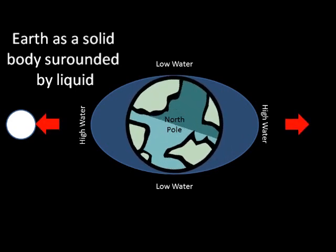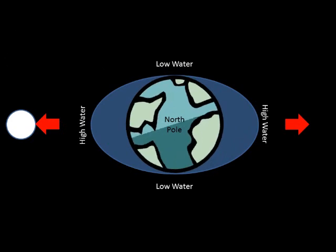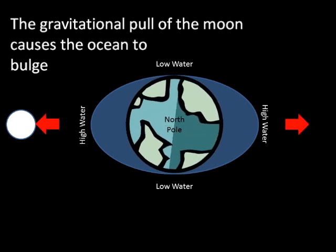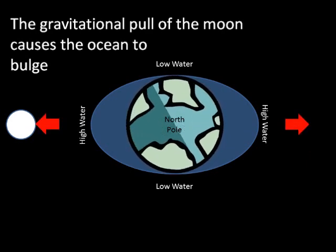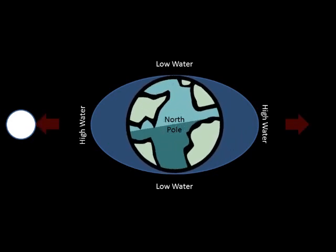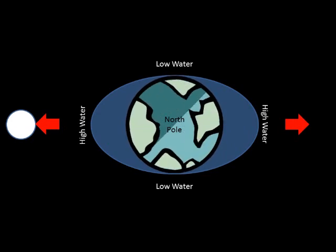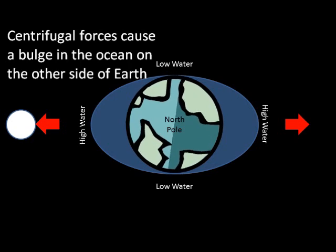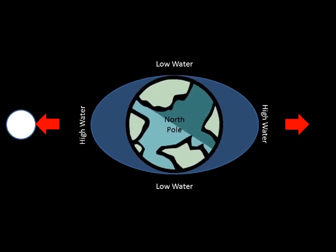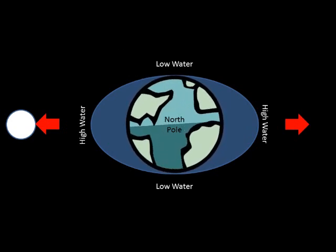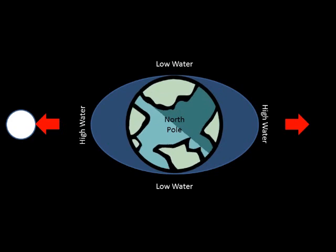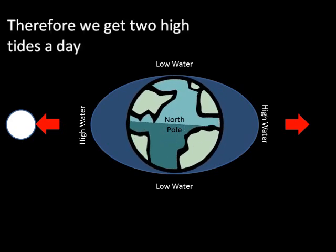The huge gravitational pull of the moon causes the ocean to bulge towards it. A second bulge occurs on the opposite side of the Earth; the reasoning behind this is rather complicated but it's based around centrifugal forces. We essentially have two bulges — one on the side of the Earth where the moon is, and the second on the opposite side.